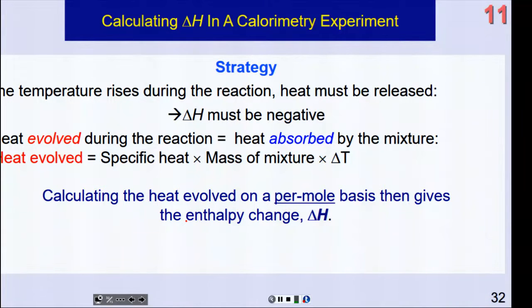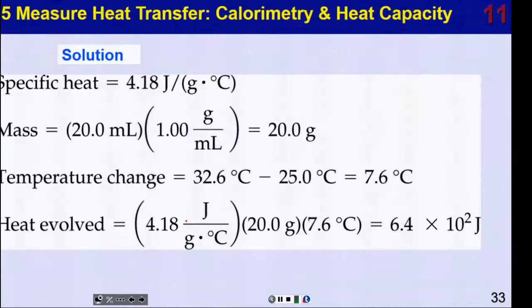When you have heat evolve during the reaction, the heat is also going to be absorbed by the mixture, by the water. And so the heat evolved is what you measure in the water getting hot, hotter, and it's heat is always that letter Q, remember? Specific heat times the mass times delta T. And so calculating the heat evolved on a per mole basis at the end will give us the enthalpy change, delta H. So we'll plug in the moles at the end of this once we've calculated the value of heat evolved.